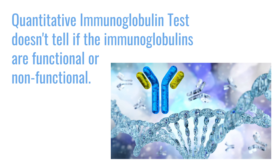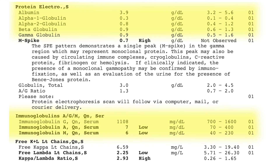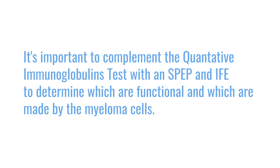When we check IgG in the quantitative immunoglobulins, it gives us the total amount of proteins and immunoglobulins of that subtype that the plasma cells are making. But it does not tell us if they are functional or non-functional immunoglobulins. So it's always important to complement quantitative immunoglobulins with an SPEP and an immunofixation, so we can better understand what percentage of those immunoglobulins are functional and which ones are being made by the cancer cells and won't help us fight infections.